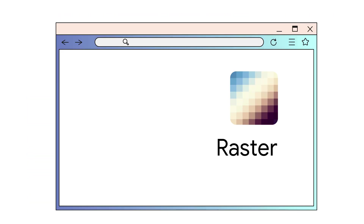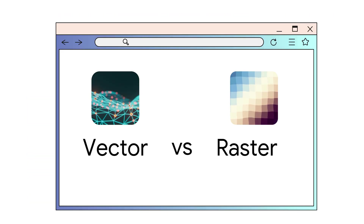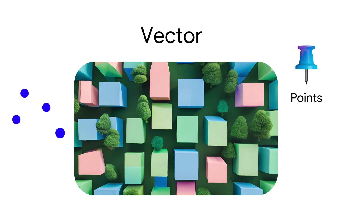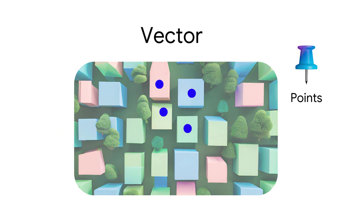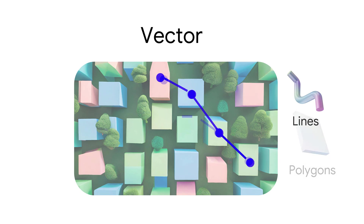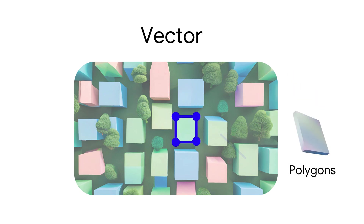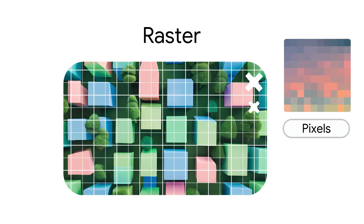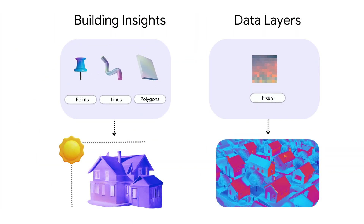For those not familiar with the terms raster or vector data: vector data means it's information about a point, a line, or a polygon, and raster data means you get images as pixels. In the next episodes, we explore how each endpoint returns data in those formats.